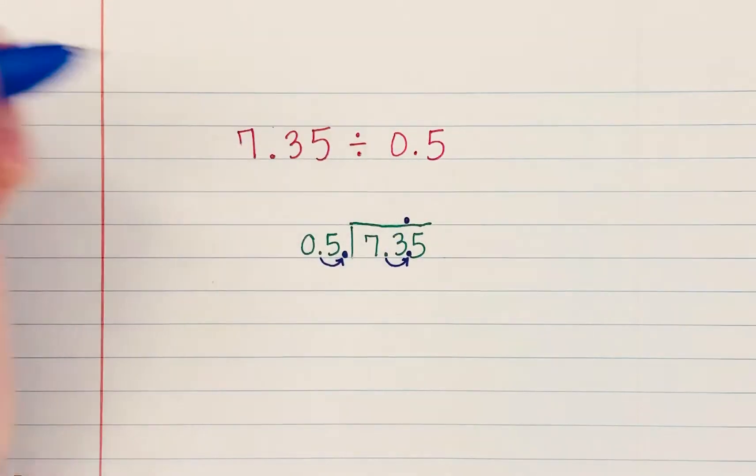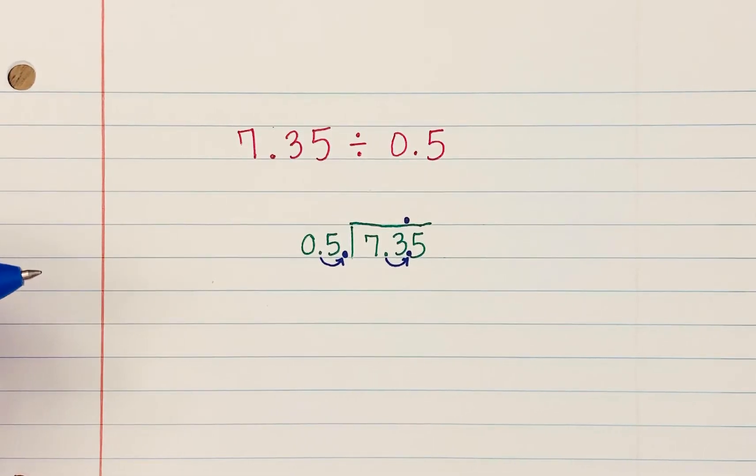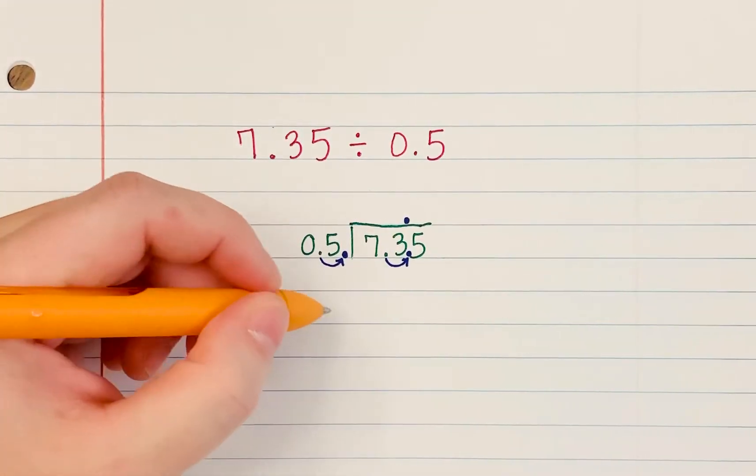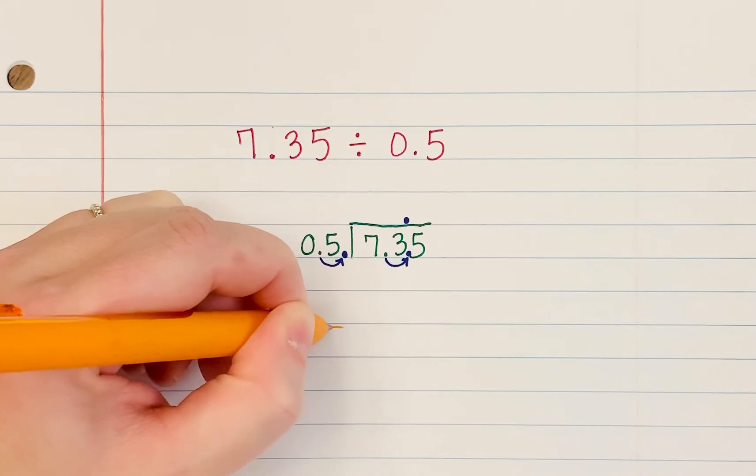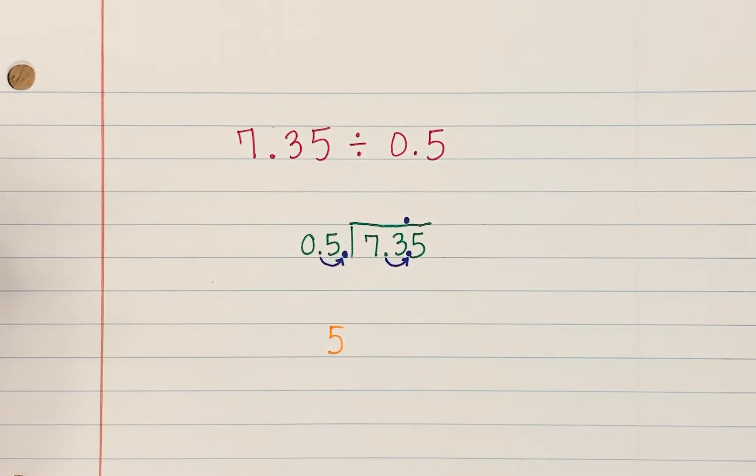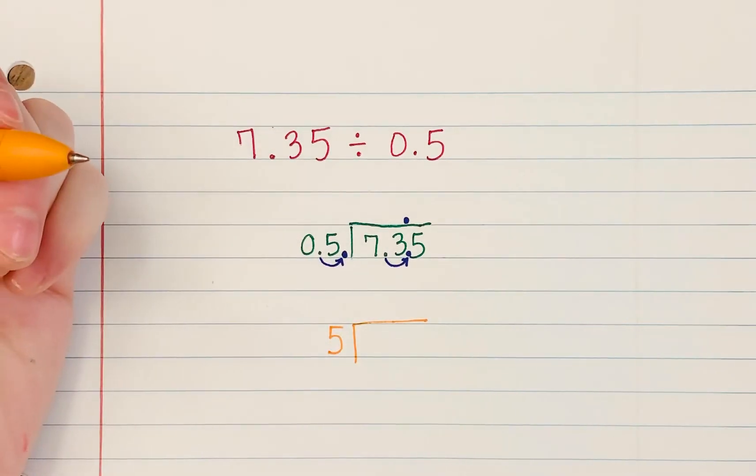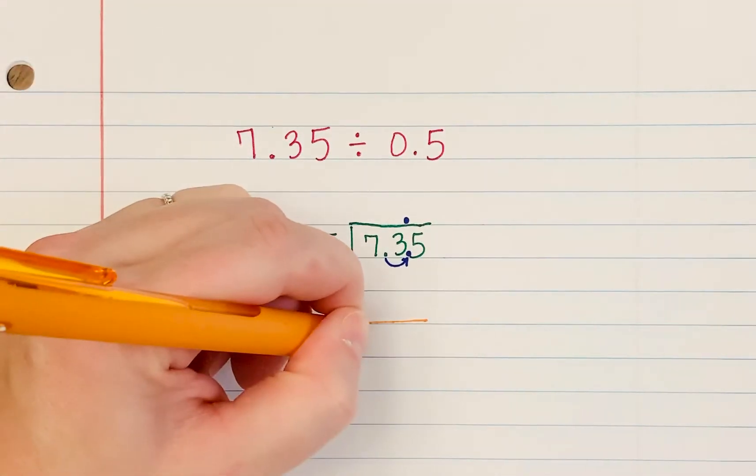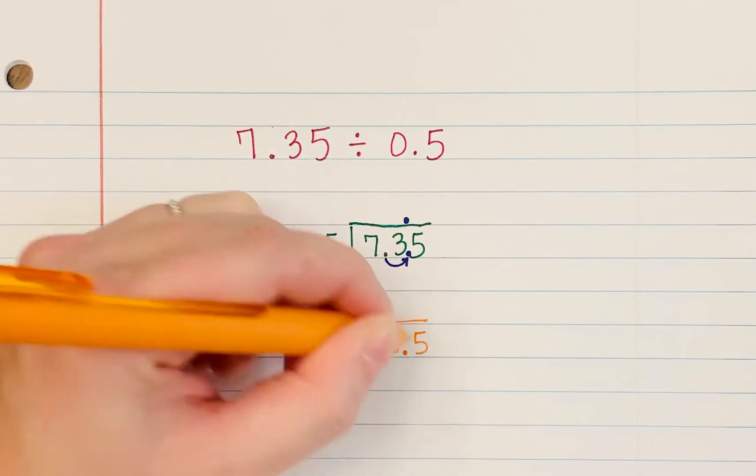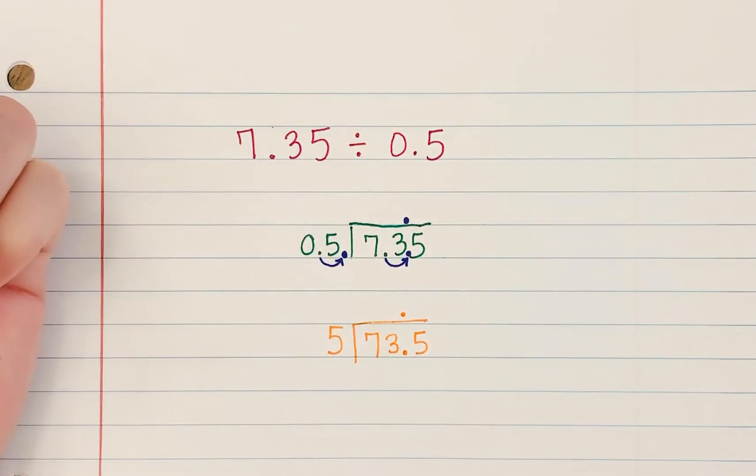Raise the roof is where we put the decimal, the new decimal point up on the top of the house. You could go ahead and divide at this point, but it could be helpful to rewrite the problem so that you don't have all of this mess here. We now have five on the outside because we moved that decimal point. And instead of 7.35 on the inside, we have 73.5. Don't forget about your decimal up on top.